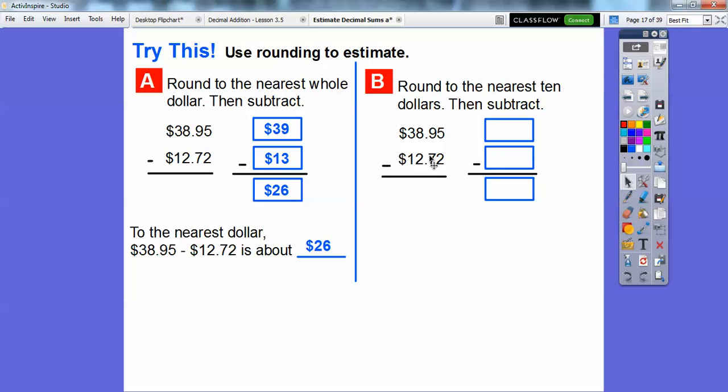Let's round to the nearest $10. We're going to round to this tens spot. This 3 is going to get rounded up to a 4 because that 8 is greater than 5, so we're going to round that to 40. This 1, since that's a 2, we're going to keep it the same at 10.